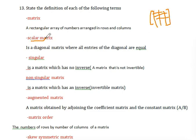Scalar matrix: A scalar matrix is a diagonal matrix where all the entries of the diagonal are equal.